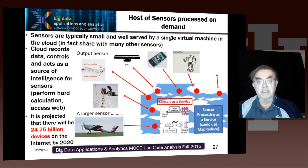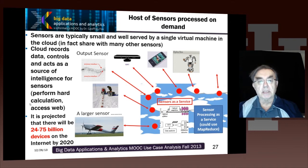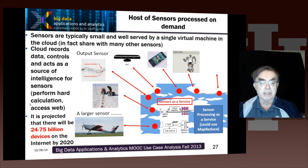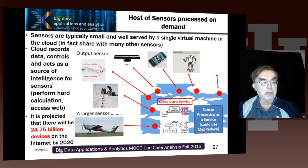An exciting case is the Internet of Things. There were 24 to 75 billion devices, or maybe — if we take all devices including those which are not on the Internet — 200 billion devices by 2020.